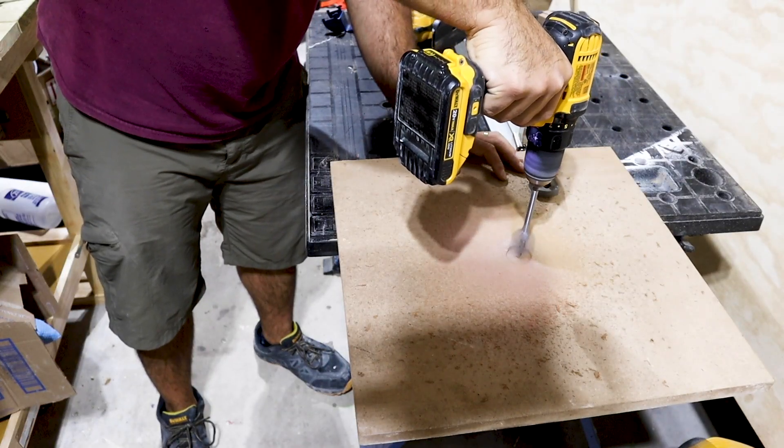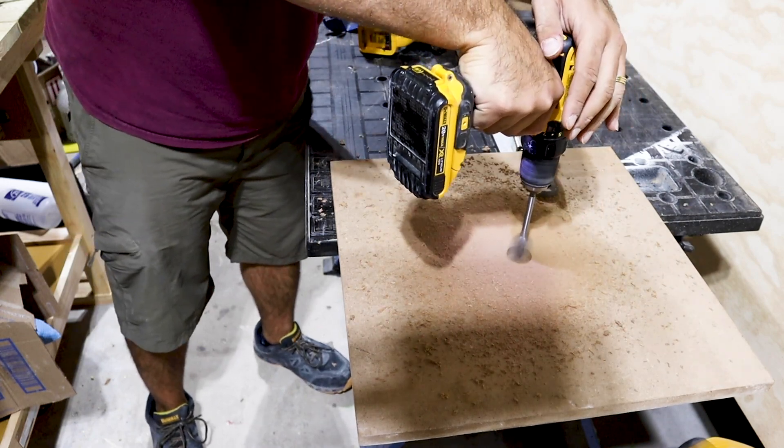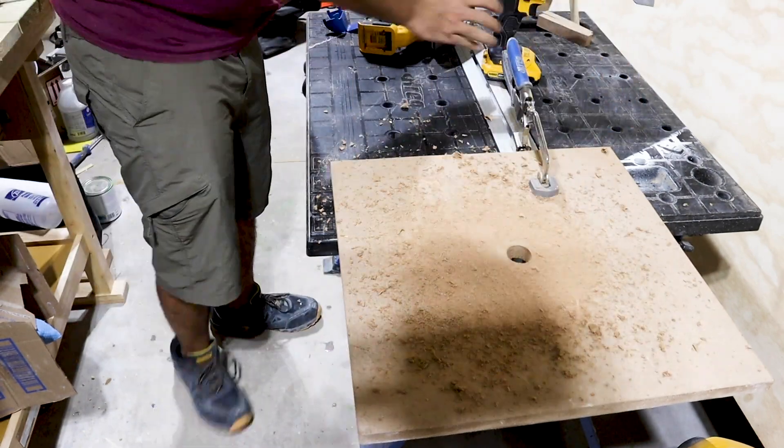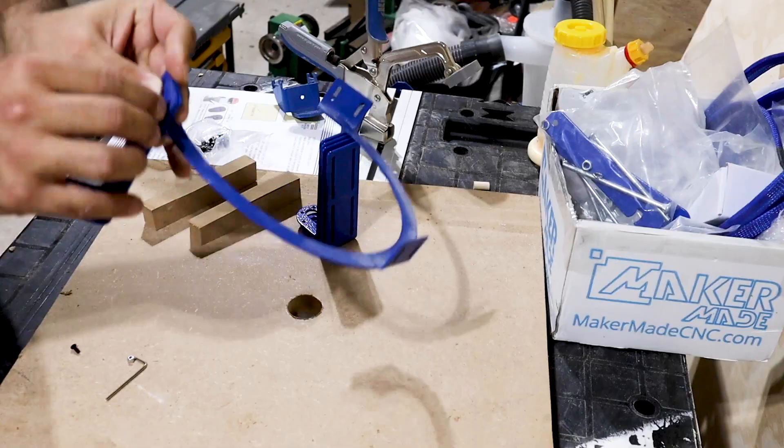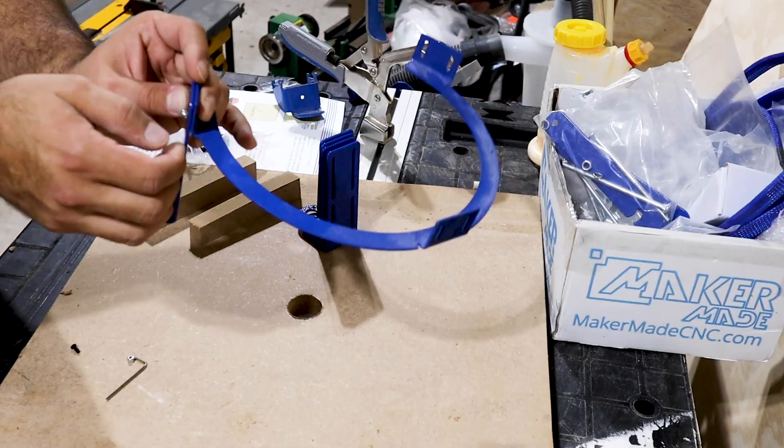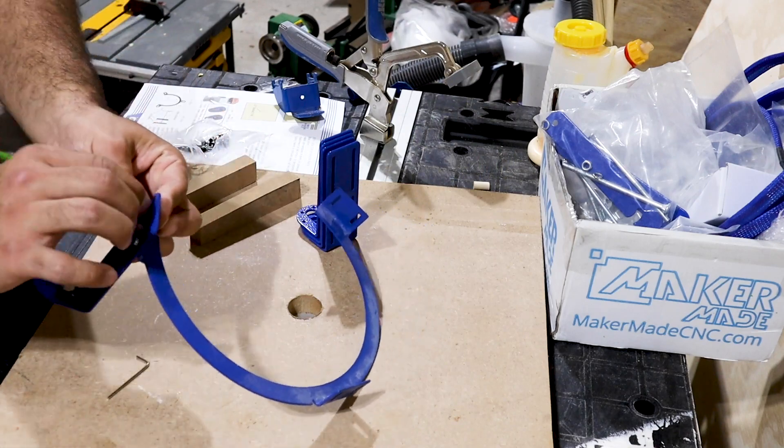I realized this was kind of pointless because at the end I ended up having a bit that could drill out a hole at one and a half inches diameter, so measuring this out wasn't as necessary. But it should be helpful if you don't have a larger drill bit laying around. Next I test all the L brackets and the bearings that ride on the ring with the provided hardware.